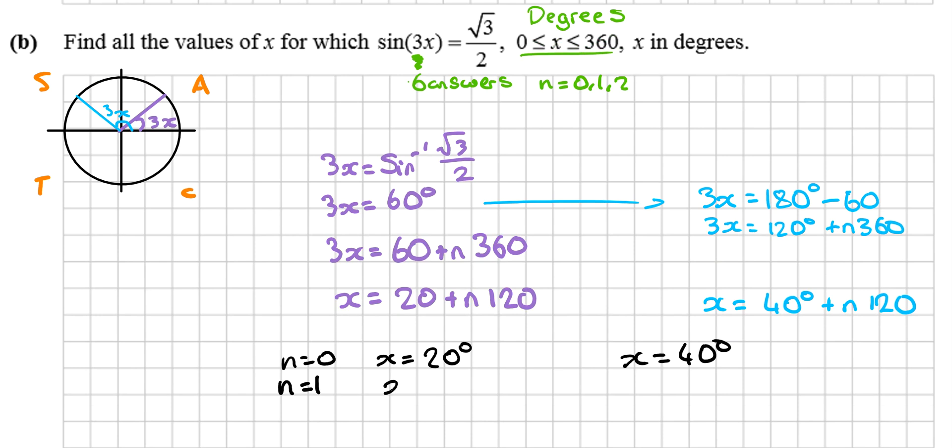n equals 1: x equals—what would you get here if you subbed in one? You'd get 140 degrees. What would you get here if you subbed in one? You'd get 160 degrees.